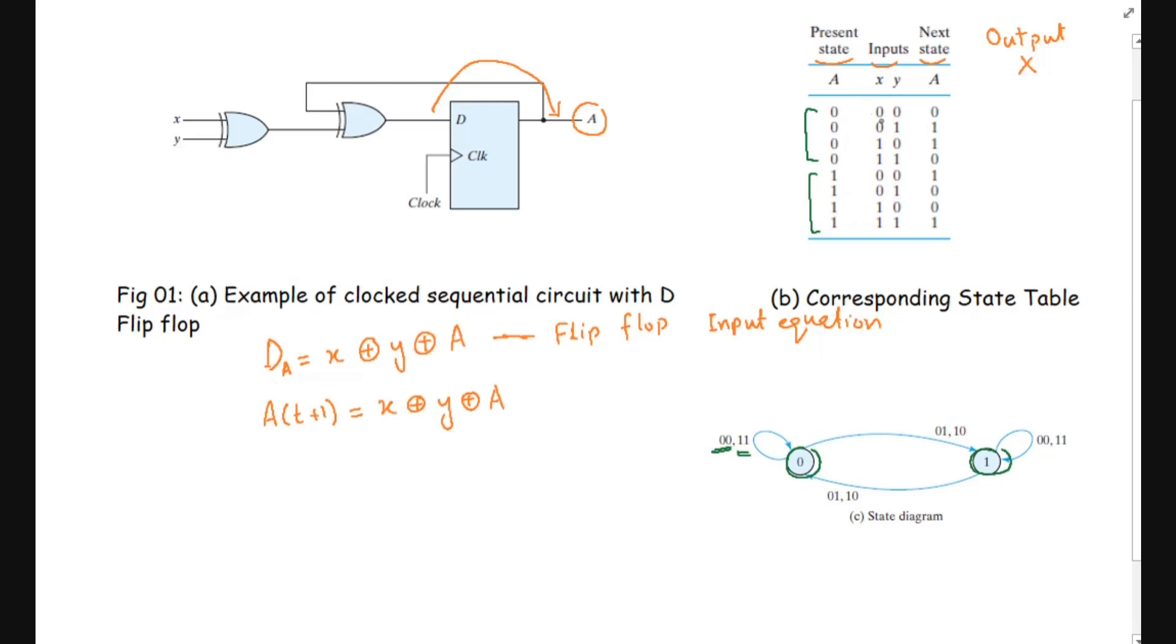If the inputs are 0,0 here you can see from this one or the inputs are 1,1 the state will remain same. Similarly, if the state is 1 and the inputs are 0,0 or 1,1 the state will again remain 1. You can see from this row here and similarly from this row here.